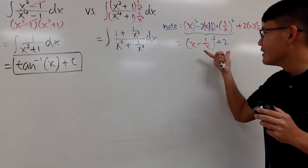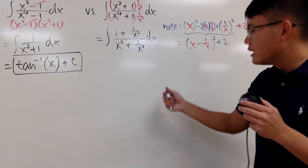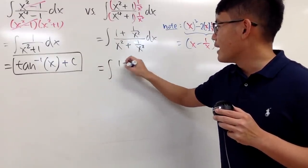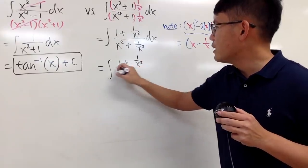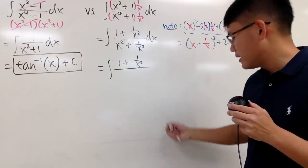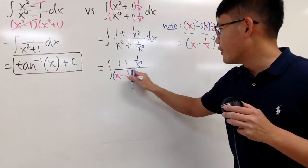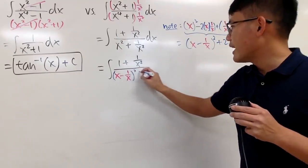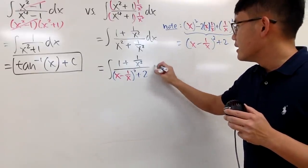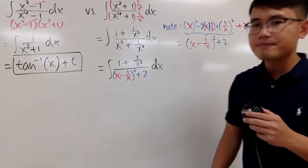I'll put this down for the denominator. This is the integral of (1 + 1/x²) over (x - 1/x)² plus 2, and then from here don't forget the dx. We'll do u-substitution.